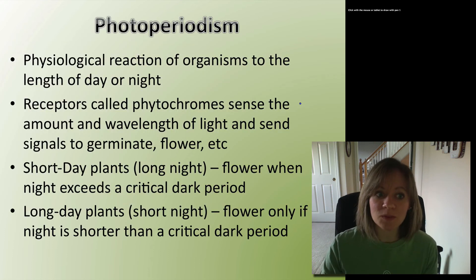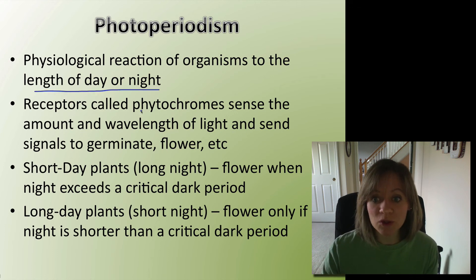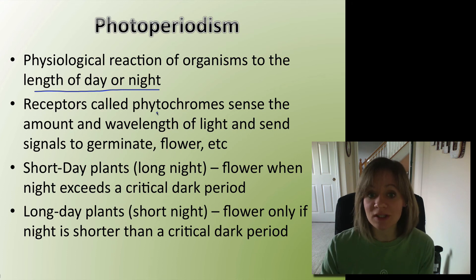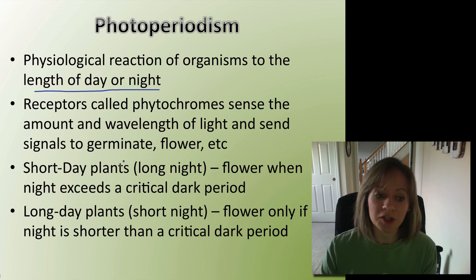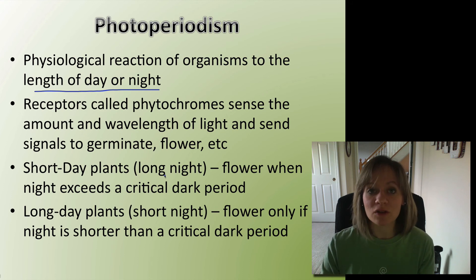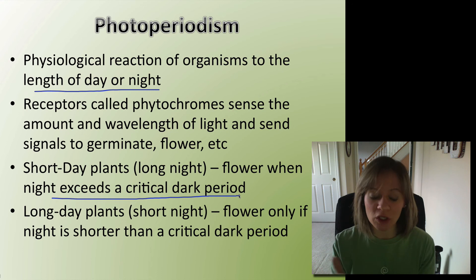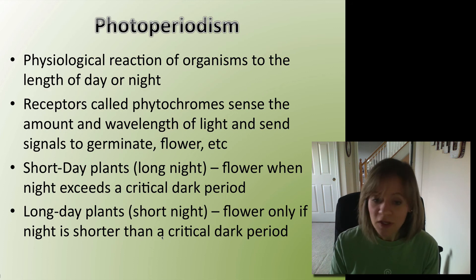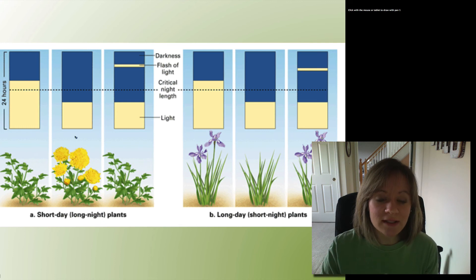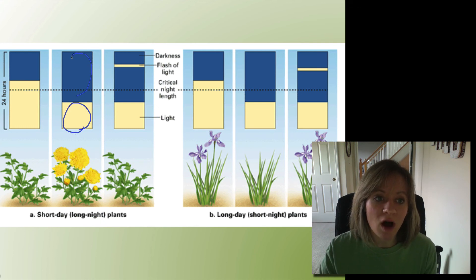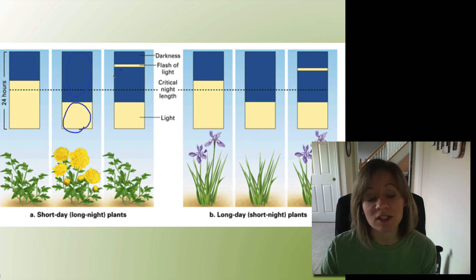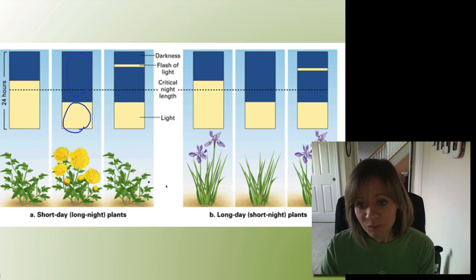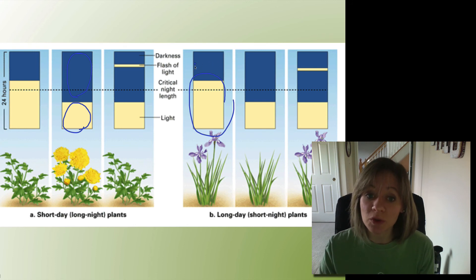Photoperiodism is a little different — this is the response to the length of day or night. Plants have receptors called phytochromes that sense the amount of light and its wavelength, and send signals to germinate, flower, or do something else. There are two broad categories: short day plants, which prefer the long night and flower only when the night exceeds a critical period; and long day plants, which flower only when the night is shorter than the critical period. Short day plants need a long, uninterrupted night — if there's a flash of light during this night, it won't flower. Long day plants need a long day and a night shorter than their critical length.